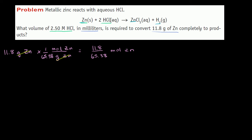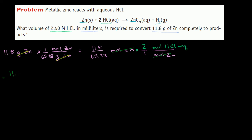Now we need to figure out how many moles of hydrochloric acid are required. From the balanced equation, for every one mole of zinc we need two moles of hydrochloric acid. So we multiply by 2 moles of HCl per 1 mole of zinc — the moles of zinc cancel out. This gives us 11.8 times 2 over 65.38 moles of hydrochloric acid required.